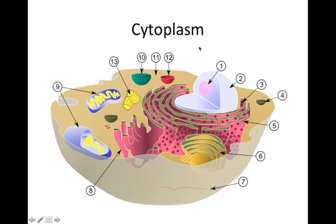The cytoplasm is a gel-like fluid found between the cell membrane and the organelles — it's what all the organelles are suspended in. Everything floats in the cytoplasm, and there are a bunch of cell processes that take place in the cytoplasm, like cell division and glycolysis.